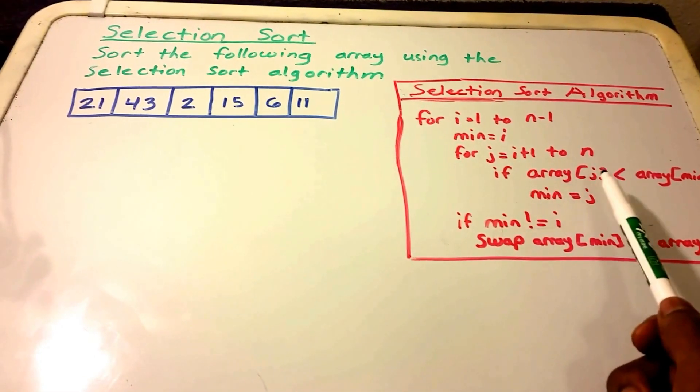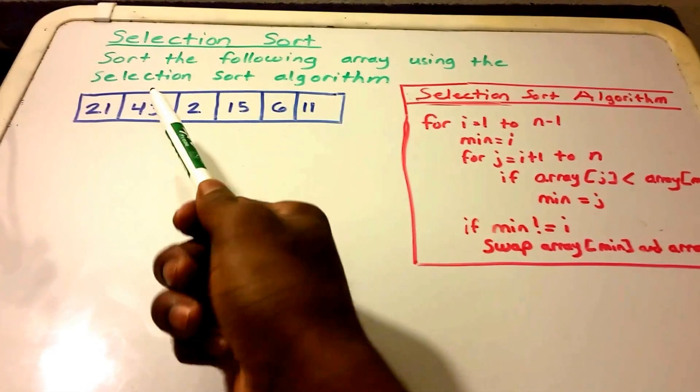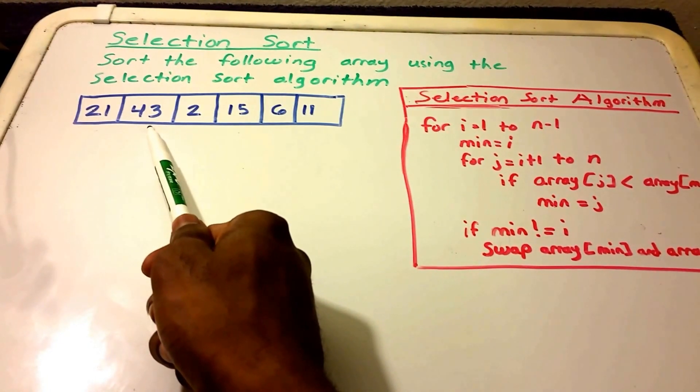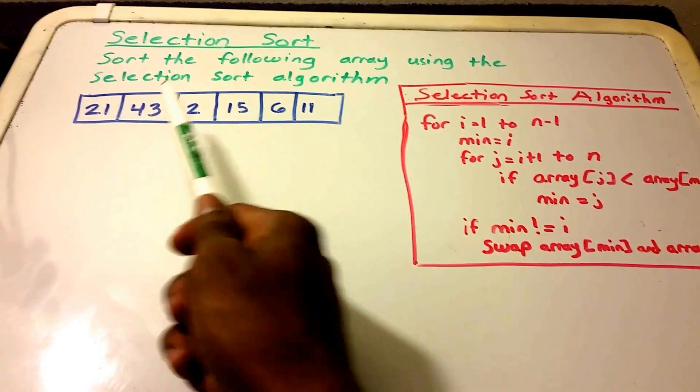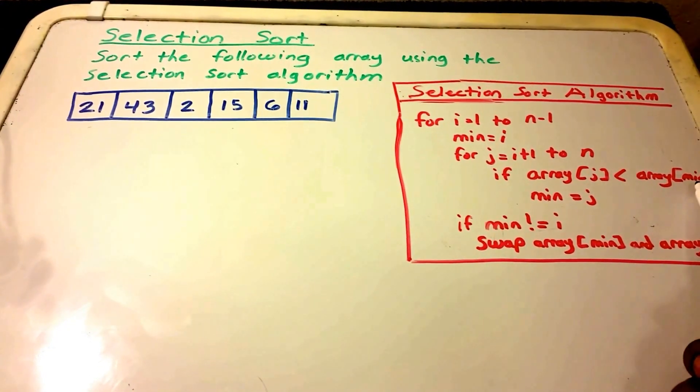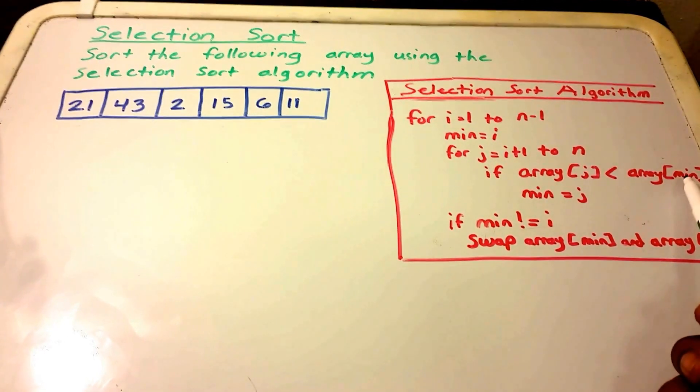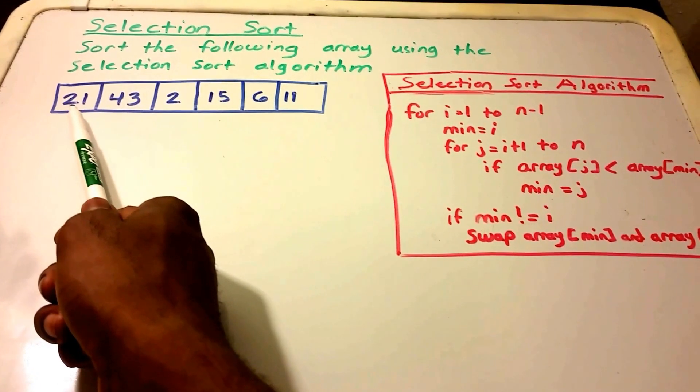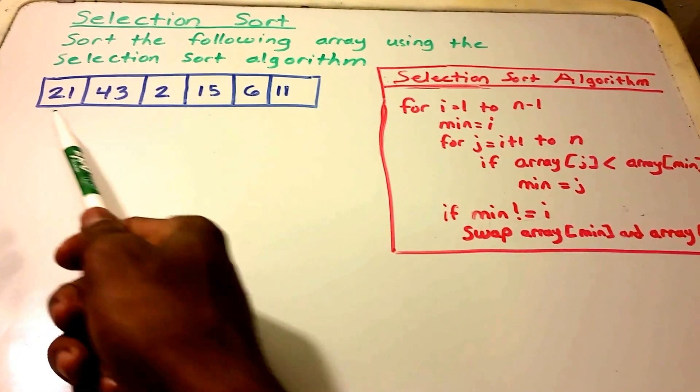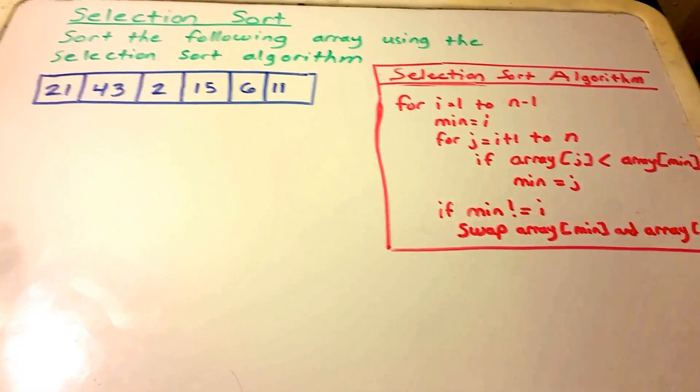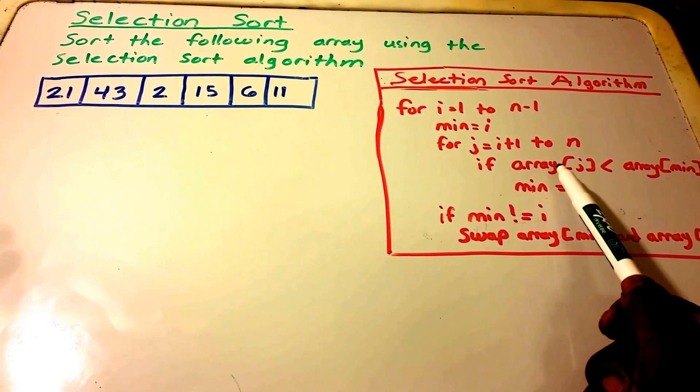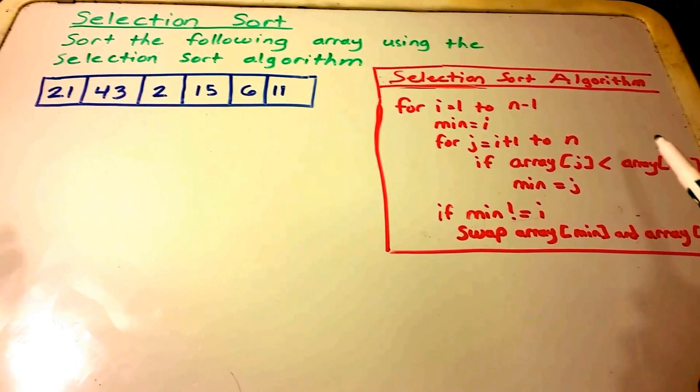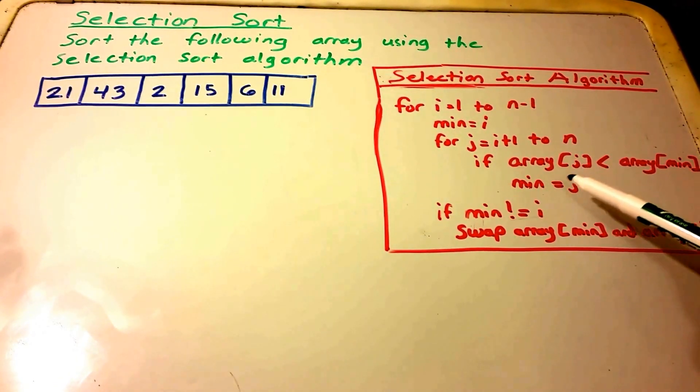Now, if the current position that we're in for j, so in this case, right now we're in i plus 1, which is 43. If that's less than the array min, so our array min is equal to i, so i equals 1. So at position 1, we have 21. But in this case, we're comparing 43, and we're checking to see if 43 is less than 21, and it's not, it's greater than, so we don't assign a new minimum value for j.